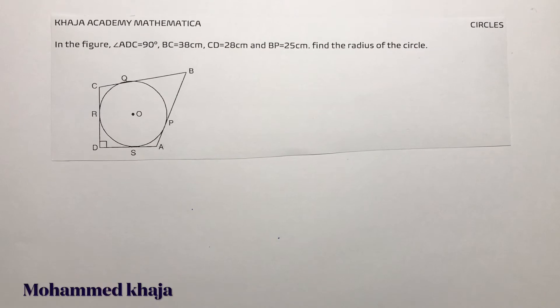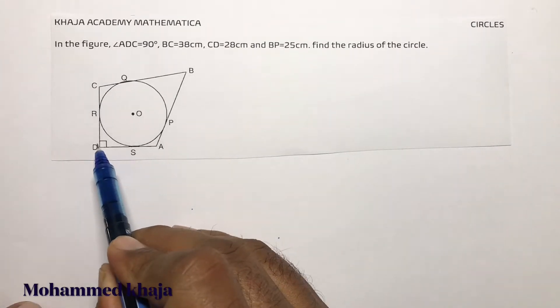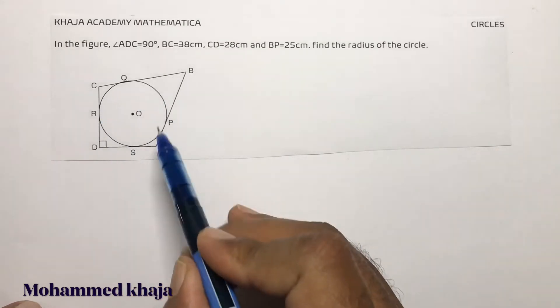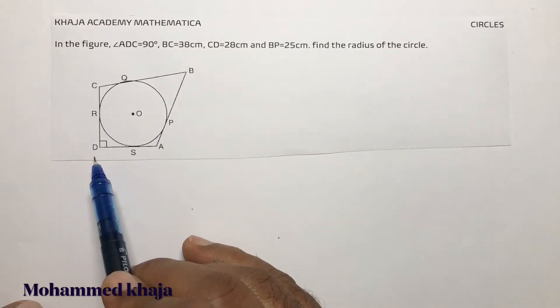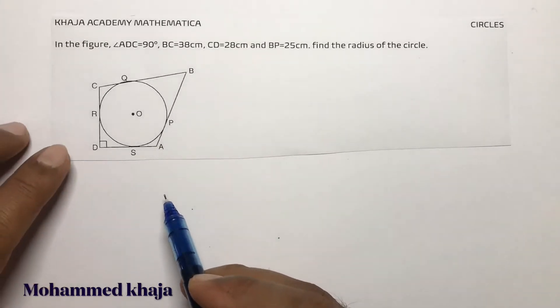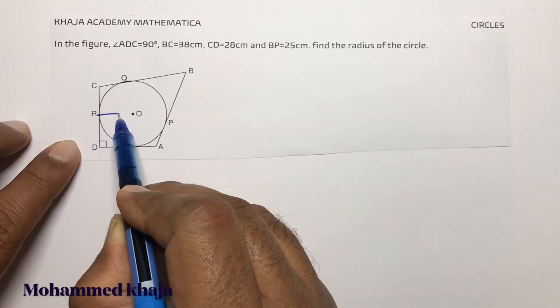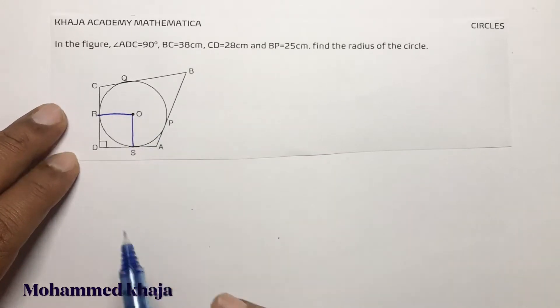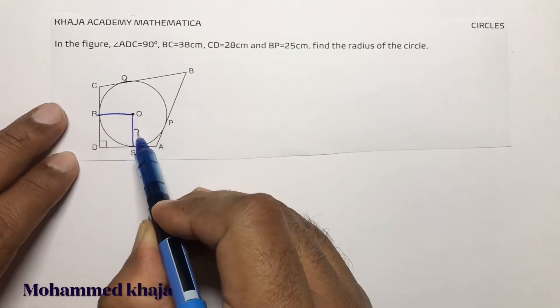In the given figure, ADC is 90°, so this angle is 90°. BC is 38cm, CD is 28cm, BP is 25cm. Find the radius. Here I need to find radius OR, joint OS. So these are all like radius.